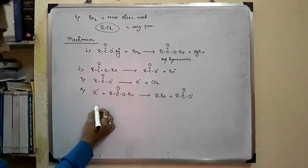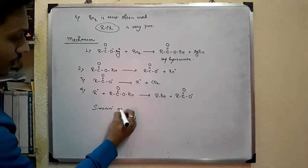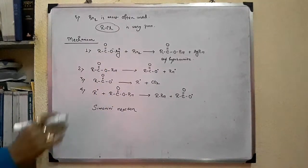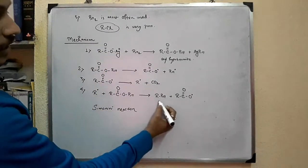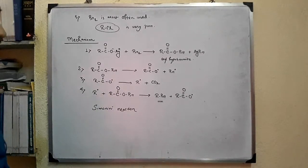And Simonini reaction follows the same mechanism, but in that case, the haloalkane formed reacts with the excess silver salt of the acid and finally, we get esters.